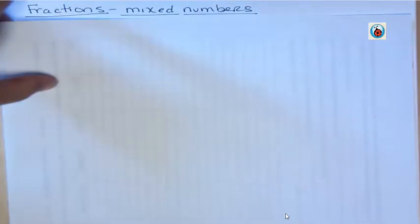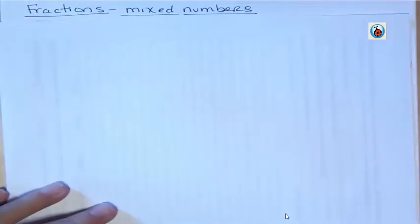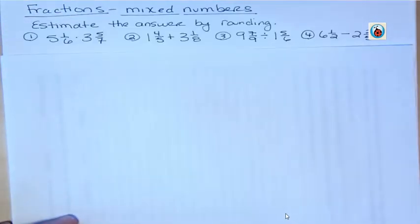Mixed numbers just means that you have a whole number part and a fraction part together. So these first four examples all have mixed numbers throughout them.